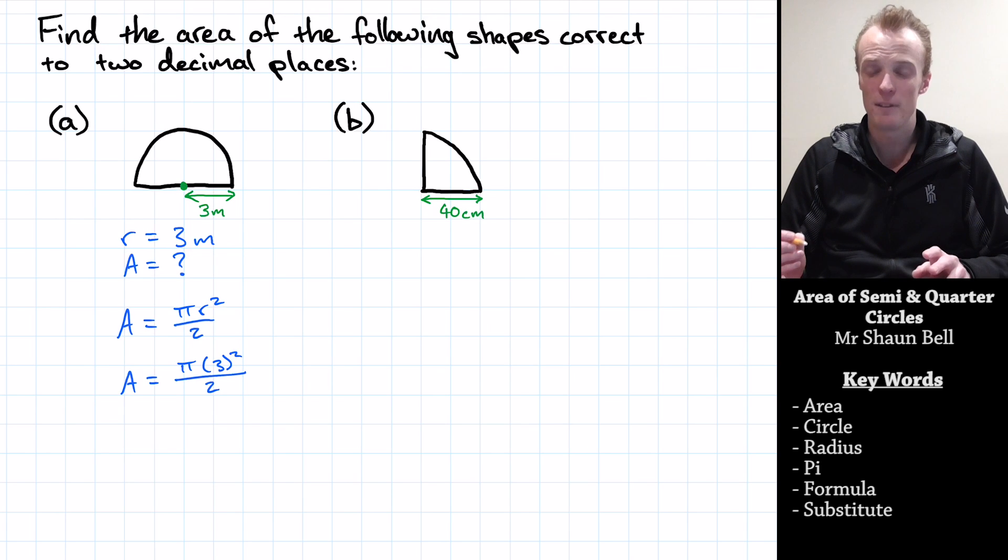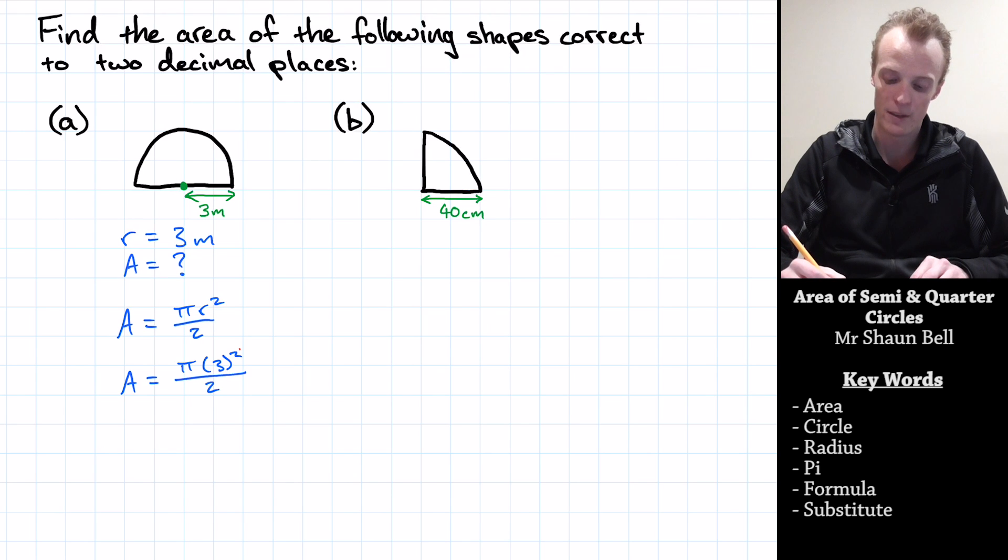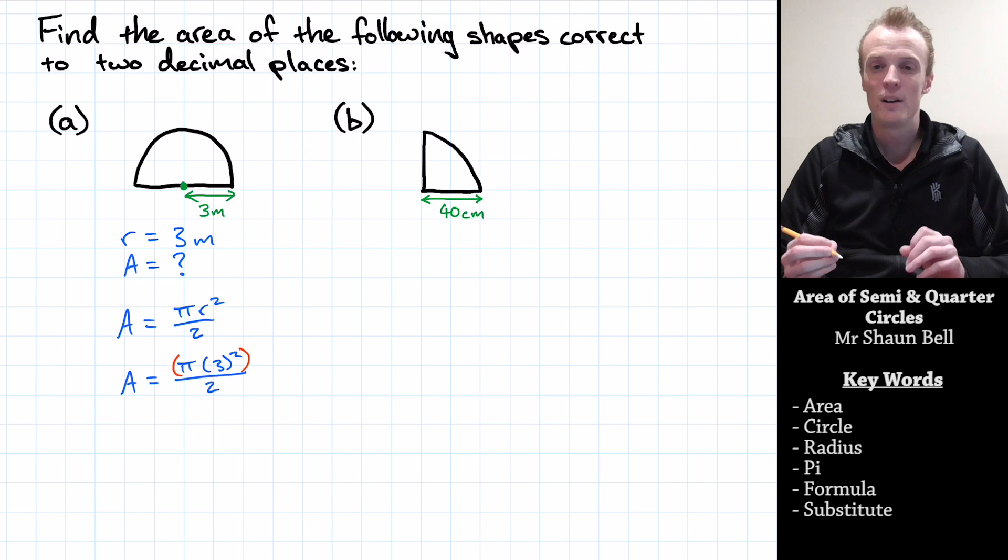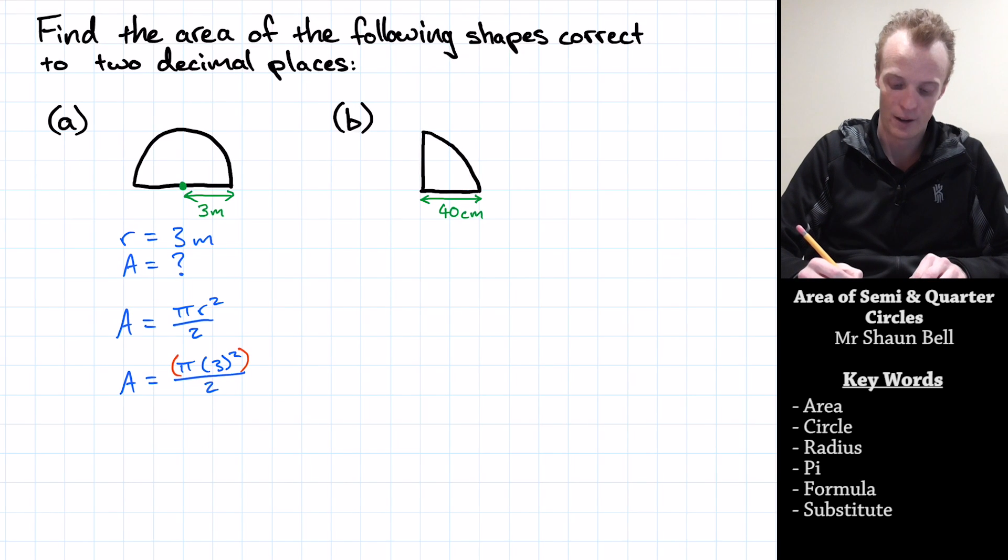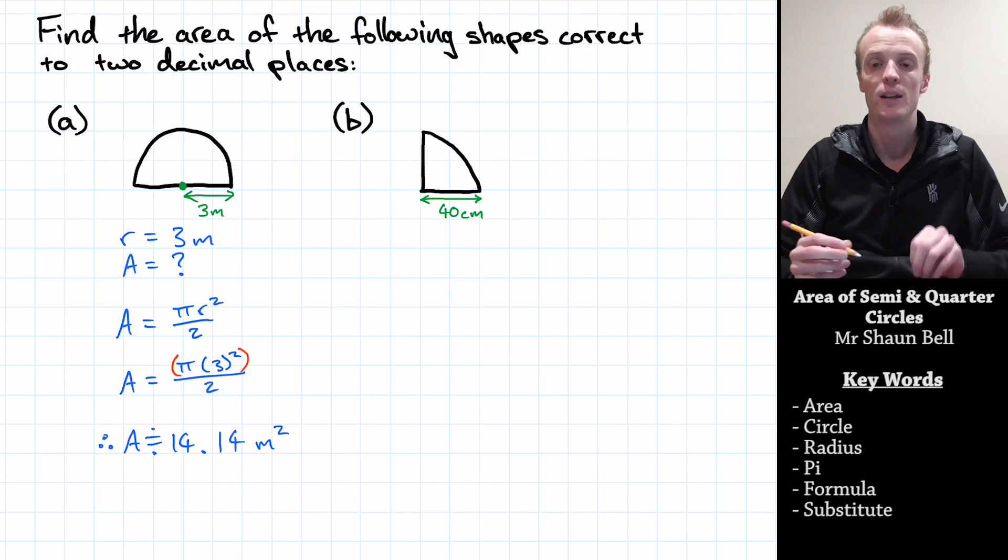Now, it's best to be really careful here if you're going to enter this into your calculator, because you've got to remember the invisible brackets that exist within a fraction. So when I do enter this into my calculator, I therefore find that the area is approximately equal to 14.14 metres square, rounded to two decimal places. It is a good idea to check that with your calculator to make sure you know how to enter it correctly.